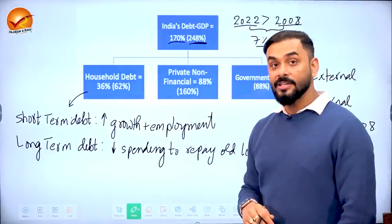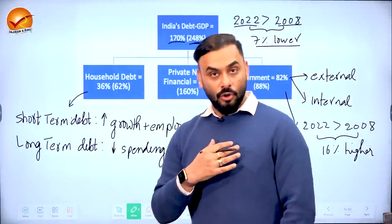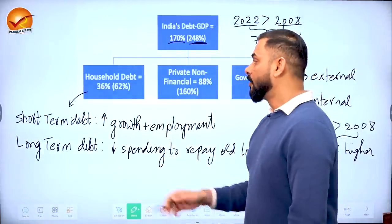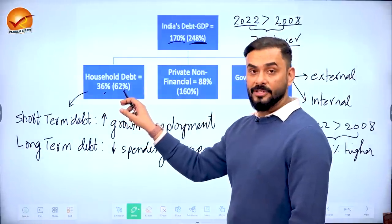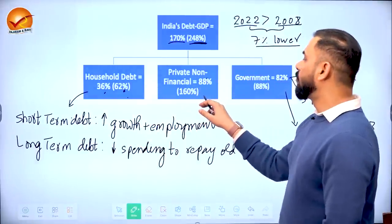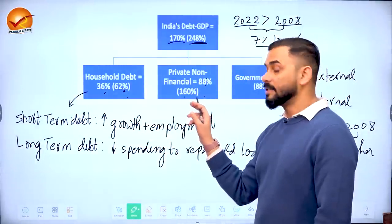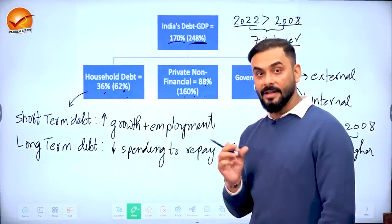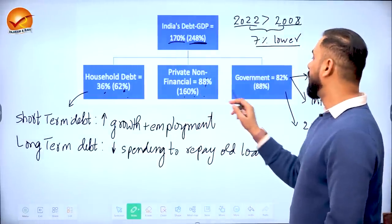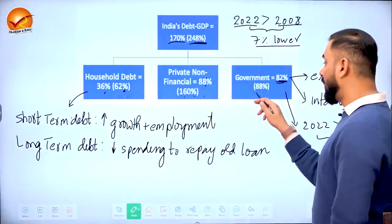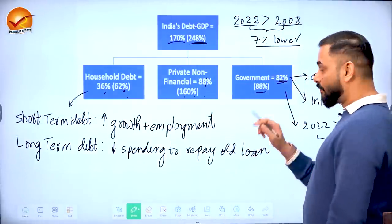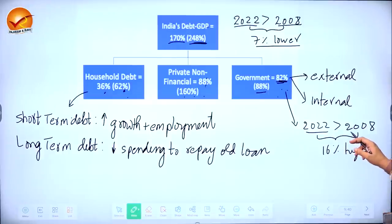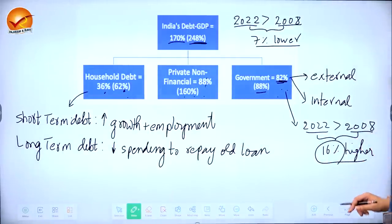However, there's a worry: in 2022, government debt is 16% higher than 2008 levels. Regarding household debt — if people spend more through credit cards or take home loans, in the short run it's good because producers produce more, output rises. But in the long run, people must repay loans, so future spending falls. Debt is dangerous if it goes beyond control — short-term benefit can lead to long-term growth problems.